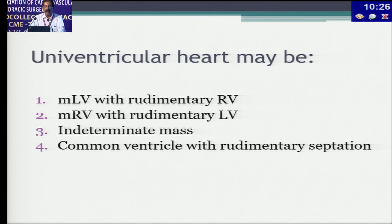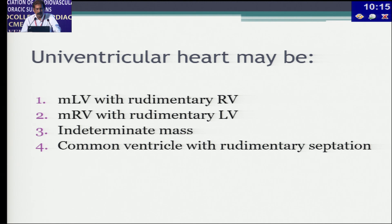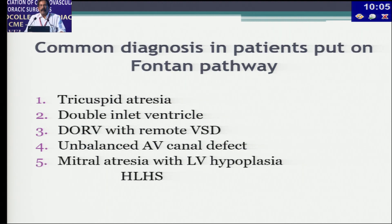A univentricular heart may be a morphological left ventricle, designed to last for a century pushing blood to the systemic circulation, or it could be a morphological right ventricle designed to pump blood into a low-pressure systemic circulation. In India, the common diagnoses in patients put on the Fontan pathway are the first four; the last one is done only at a few centers.